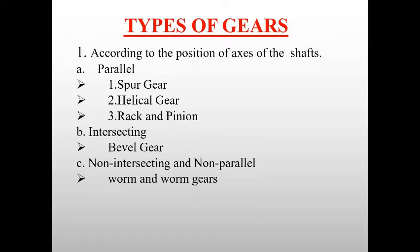In the parallel category, it is further classified into spur gear, helical gear, and rack and pinion. Intersecting gear is only one type: bevel gear. And non-intersecting and non-parallel gear is worm and worm gears.